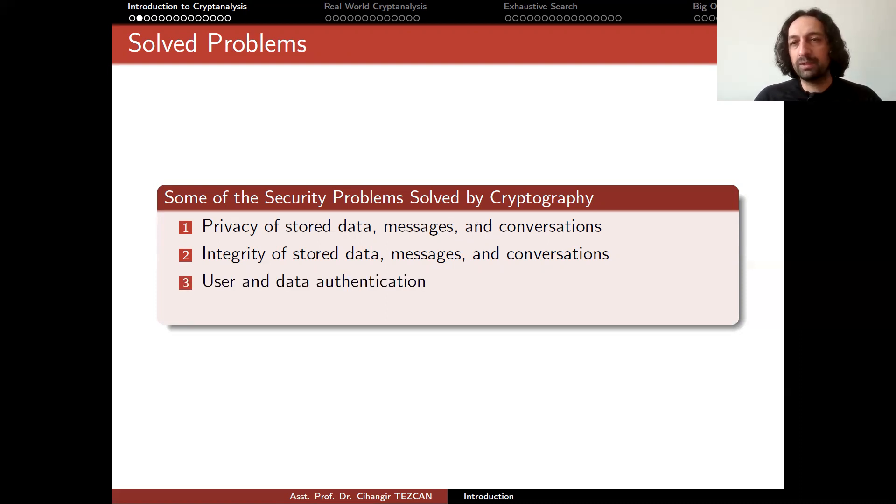We also have user and data authentication. This is also solved by cryptographic algorithms. This can be done by public key algorithms, or it can also be done by authenticated encryption or message authentication codes. When you attack in this kind of scenarios, you will try to be impersonating the person if it's a user authentication. Otherwise, your aim would be to modify the data, but it will still pass the authentication. Another thing that cryptography solves is the transaction non-repudiation. This can be done by digital signatures.